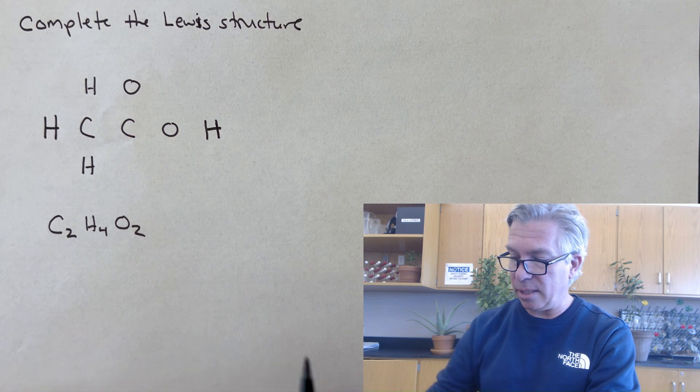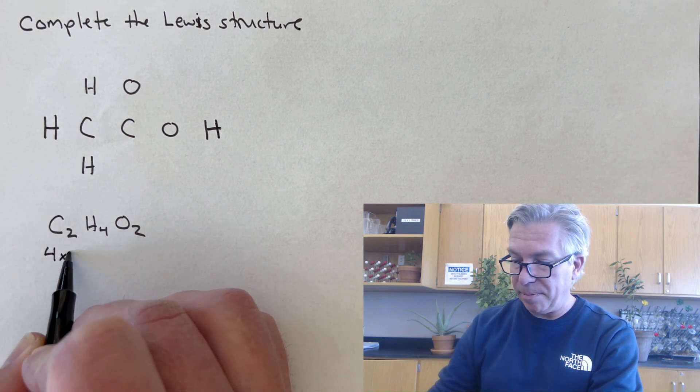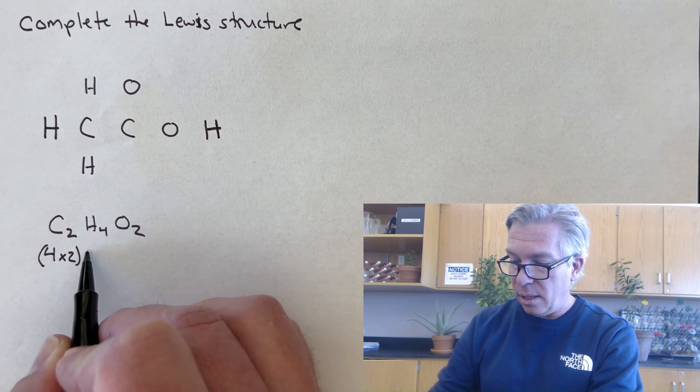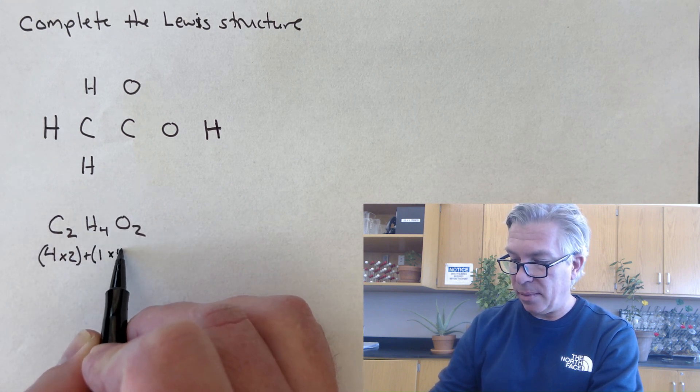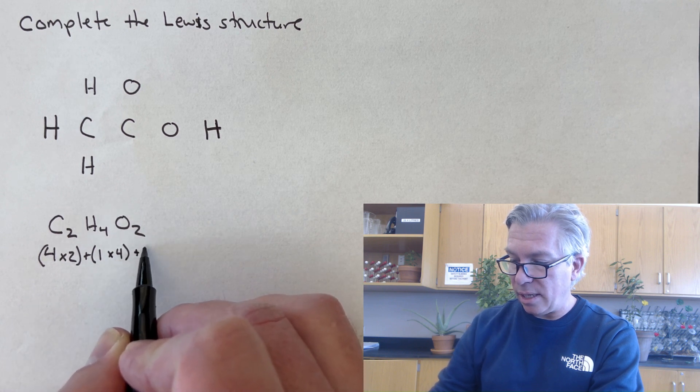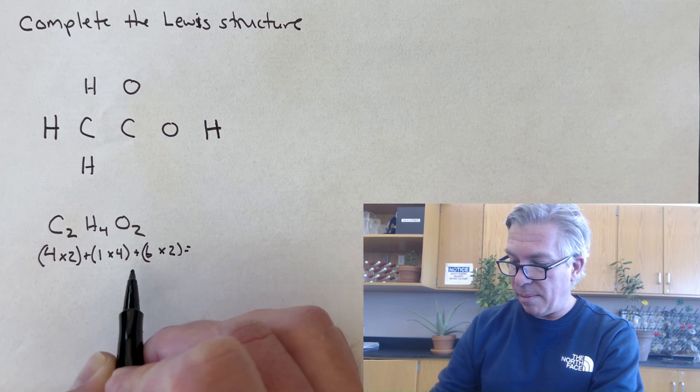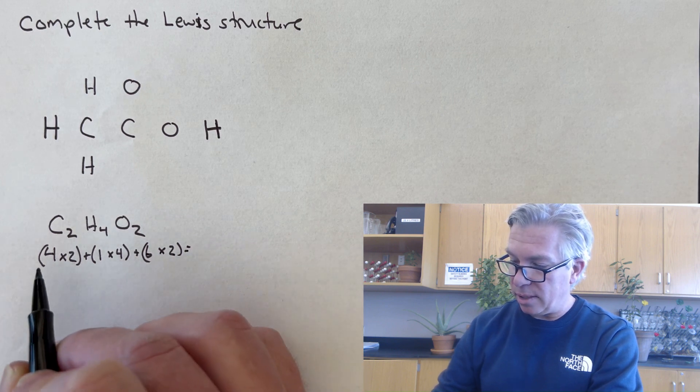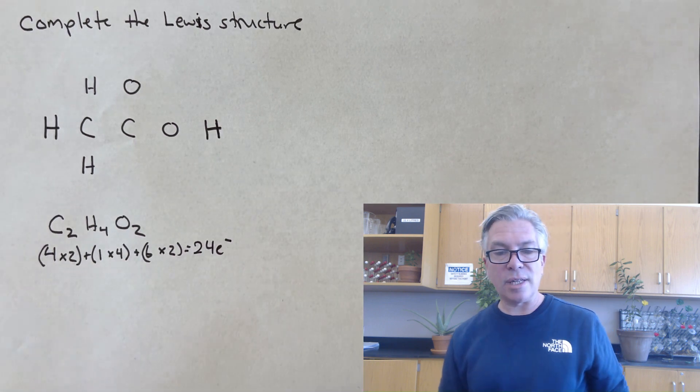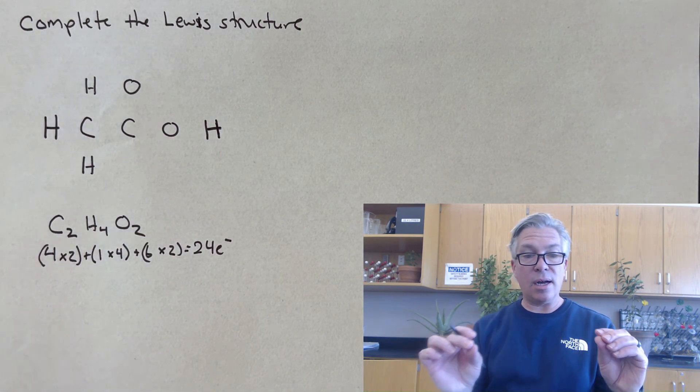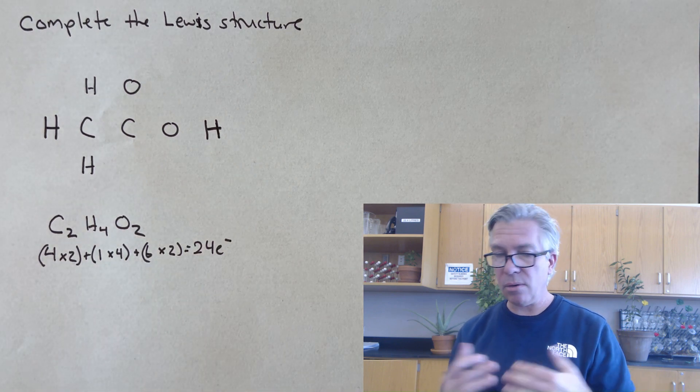Each carbon has four valence electrons and there's two of them. Each hydrogen has one valence electron and there's four of them. And each oxygen has six valence electrons and there's two of those. So that makes a total of 12 plus 8 is 20. So 24 electrons. I need 24 electrons in this structure, whether they're lines representing bonds or extra dots representing lone pairs.